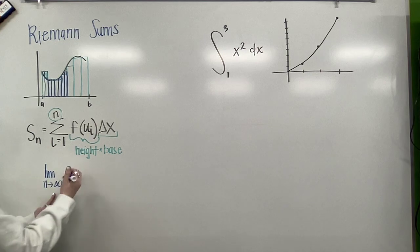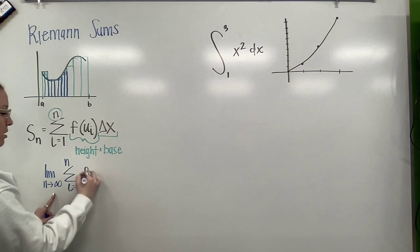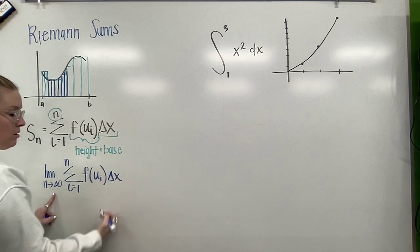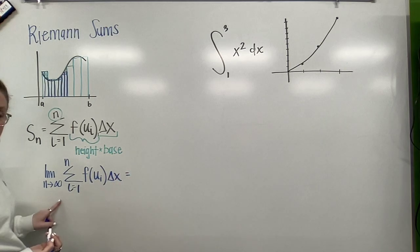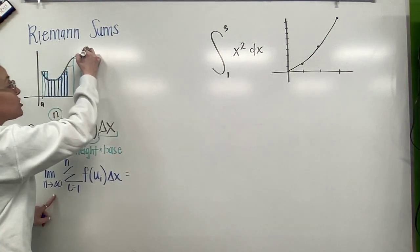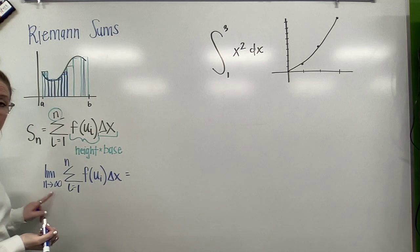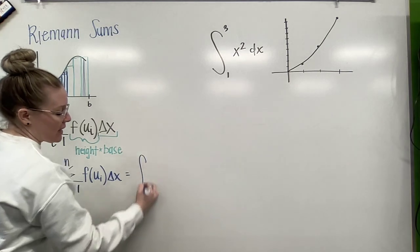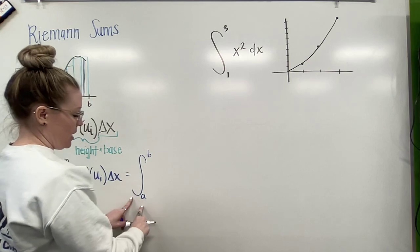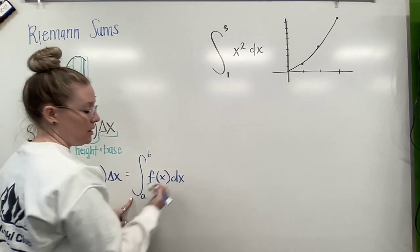So if I take the limit as n approaches infinity of this function, adding up all of my rectangles together, there's a different way that we can write this. So as I'm dealing with an infinite amount of rectangles, I mean just picture each little sliver is its own rectangle. How am I going to show that? Mathematically, this is our integral. So the integral from a to b of whatever our function is, dx.